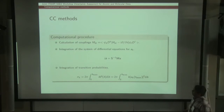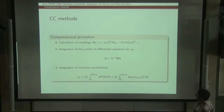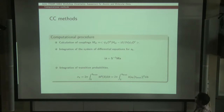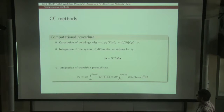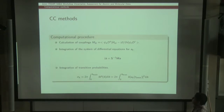In practice, the computational procedure involves the calculation of couplings, the solution of a differential equation for the coefficients of the expansion, and from these coefficients you can calculate transition probabilities and total cross sections. The uncertainties involved in these calculations — from the couplings, the solution of the differential equations, the choice of final integration time, the final impact parameter, and the grid of impact parameters — in general I would say they are not relevant. Calculations have been done in such a way that the influence of these choices is not important.